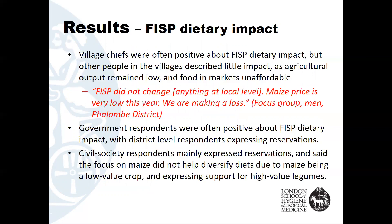Village chiefs were often positive about FISP's dietary impact, but other people in the villages described little impact, as agricultural output remained low and food in markets was unaffordable. Ministry of Agriculture respondents had a greater awareness of the FISP than health respondents, and were particularly positive about dietary impact. Civil society respondents mainly expressed reservations, describing how a focus on maize did not help diversify diets due to maize being a low-value crop, and they expressed support for high-value legumes.